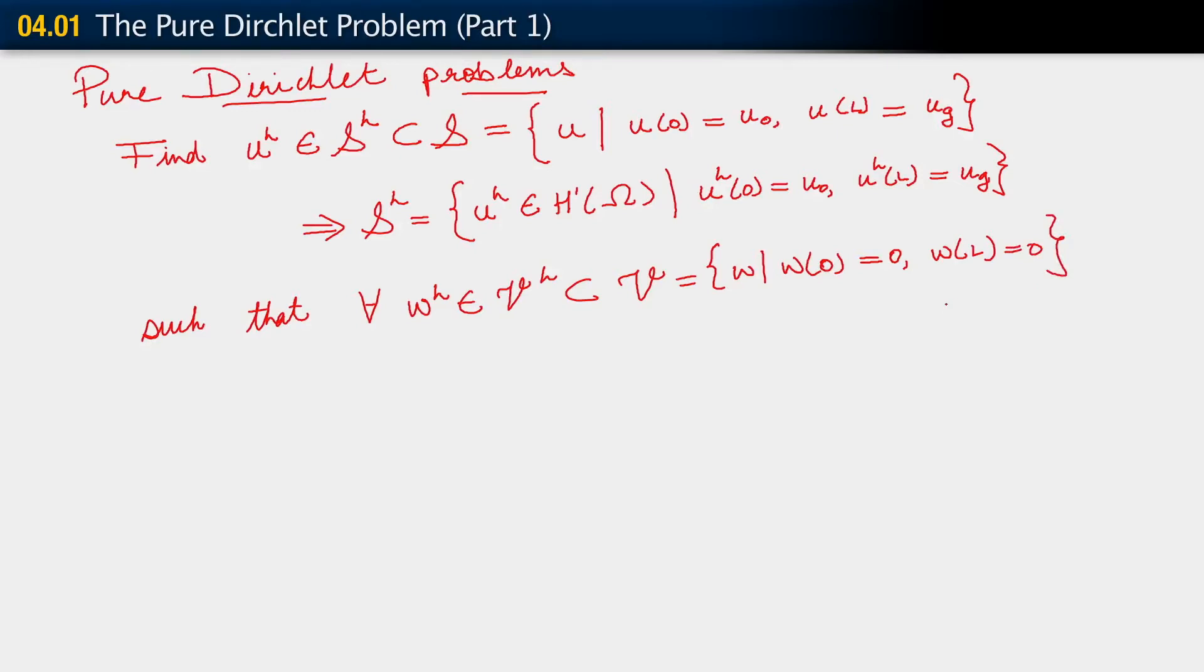That's the kind of U_H we want to find. So find U_H of this form such that for all W_H belonging to V_H, and just for consistency with what I wrote above, let me do this properly. V_H is a subset of V, which consists of all functions W such that W at 0 equals 0 and now W at L also equals 0.